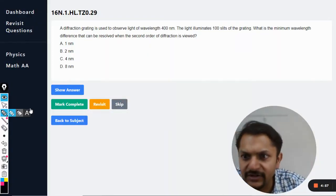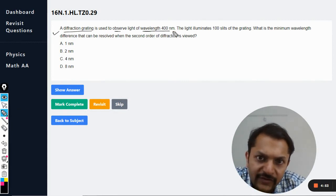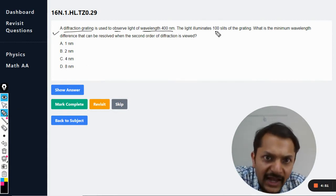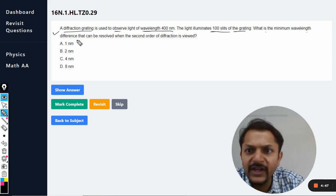Okay, dear students, let us see what is there in this question. A diffraction grating is used to observe light of wavelength 400 nanometers. The light illuminates 100 slits of the grating in total. What is the minimum wavelength difference that can be resolved when the second order of the diffraction is viewed?